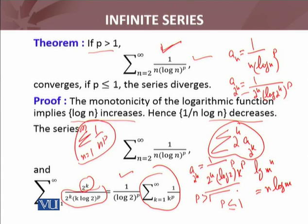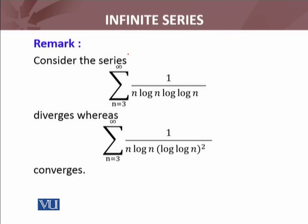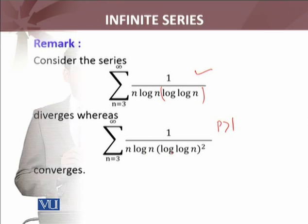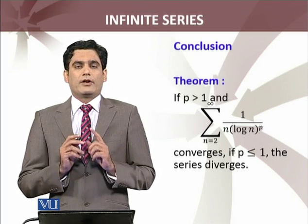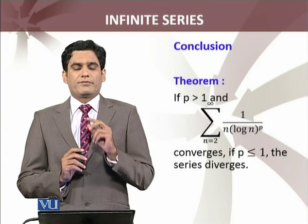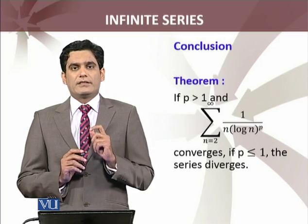By applying the Cauchy condensation result — that summation a_n and the condensed series both converge or diverge together — I can conclude that the original series is convergent if p is greater than 1 and divergent if p is less than or equal to 1. As a remark, we can extend this result: for example, the series summation 1 over n·log(n)·log(log(n)) diverges, whereas summation 1 over n·log(n)·(log(log(n)))^p with p greater than 1 converges.